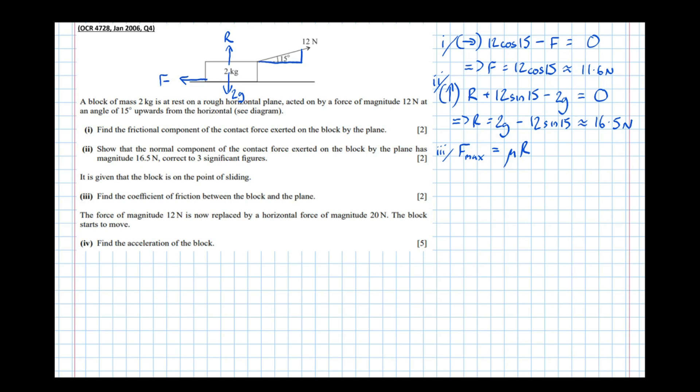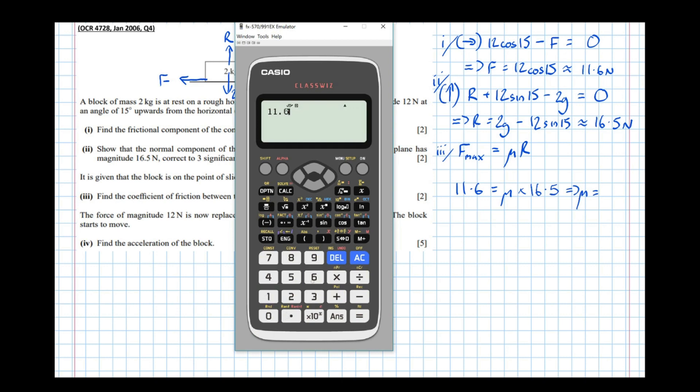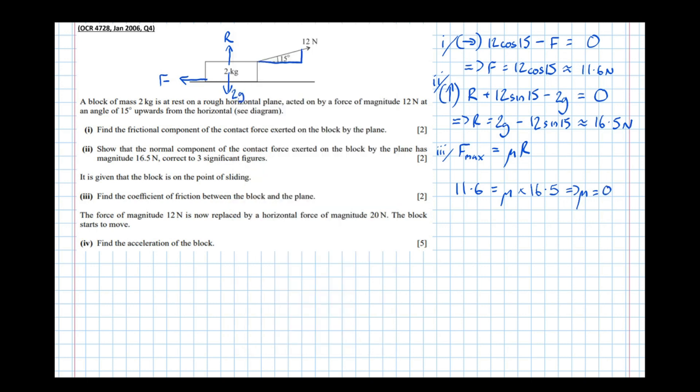So we've got that the frictional force, which we worked out in part one, is 11.6. 11.6 equals μ times the normal reaction force, 16.5, which means that the coefficient of friction is equal to 11.6 divided by 16.5, which is equal to 0.703 to three significant figures.